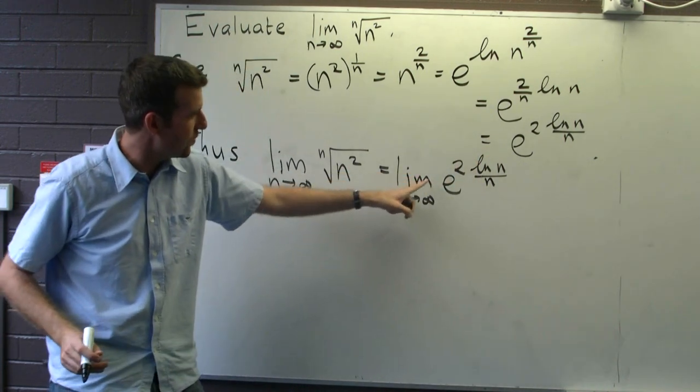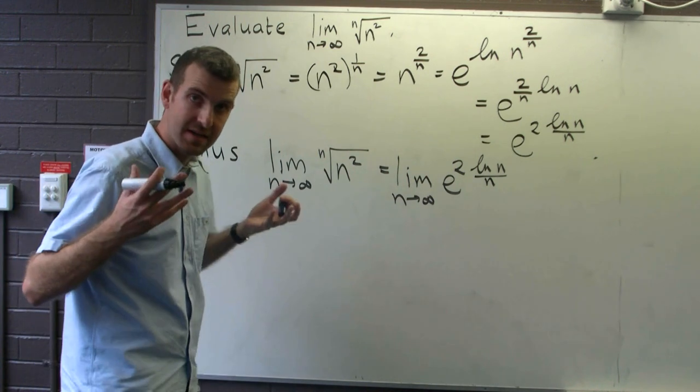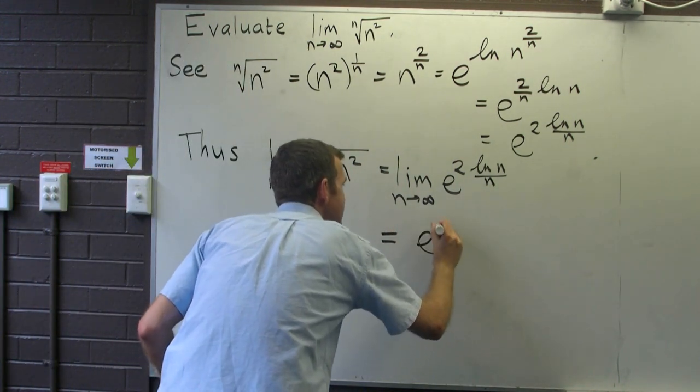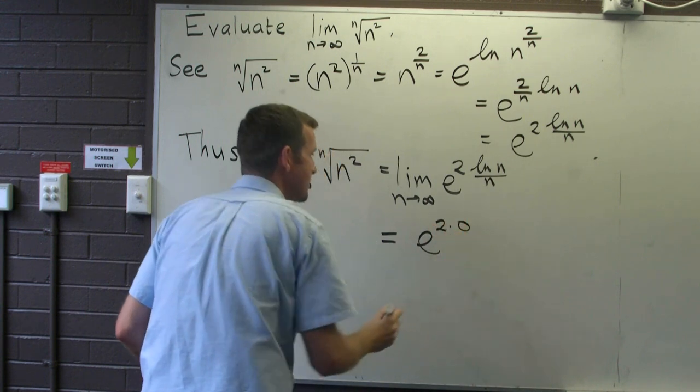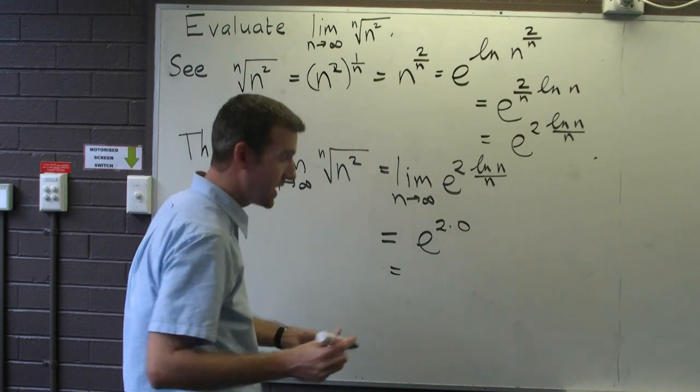To evaluate this limit, all I need to do is take the limit of log n all over n, and that is zero. So e to the 2 times zero, which is of course e to the zero, and e to the zero is 1.